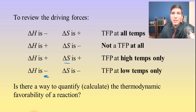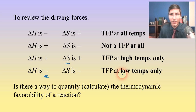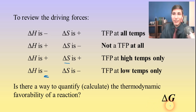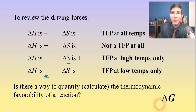This brings up the question: is there a way to actually quantify this? We said high temperatures or low temperatures — but how high or how low? Can we put numbers to this and determine how thermodynamically favored something is? Since this is chemistry, the answer is yes. There is another quantity we're going to calculate called delta G, which stands for Gibbs free energy. That's a numerical value of the thermodynamic favorability of a reaction, and that's what we're going to discuss in the next video.